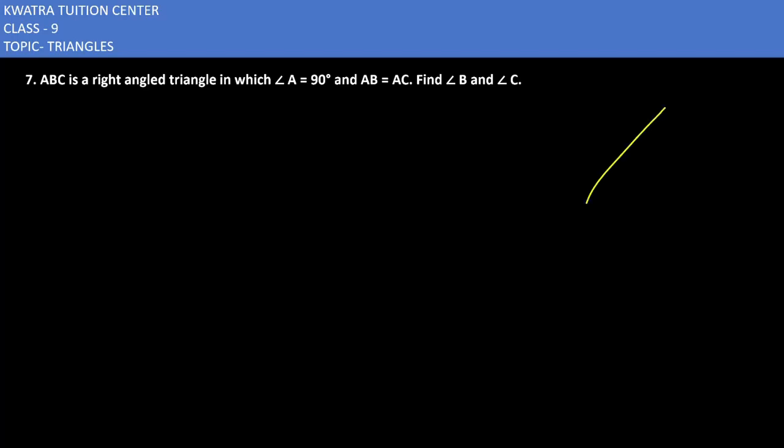So, this condition is that your angle A would be 90°. A value is 90°. AB is equal to AC. And what do we need to find? Find angle B and C respectively.